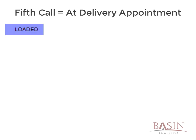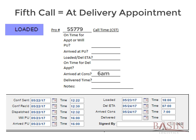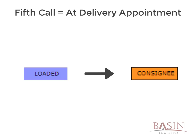The next check call will be made to the carrier at the scheduled delivery appointment time to confirm that the carrier has arrived and is waiting to be unloaded. Based on the example, you should call Jim at 6 o'clock AM Central Standard Time to confirm his arrival at the consignee. Following the example, Jim tells you that he has arrived at 7 o'clock AM Eastern Standard Time and is being unloaded. You should be able to update ALJACS based on the information given to you by the driver. Once you update ALJACS with the new information, it will progress the load to the next step from loaded to consignee.